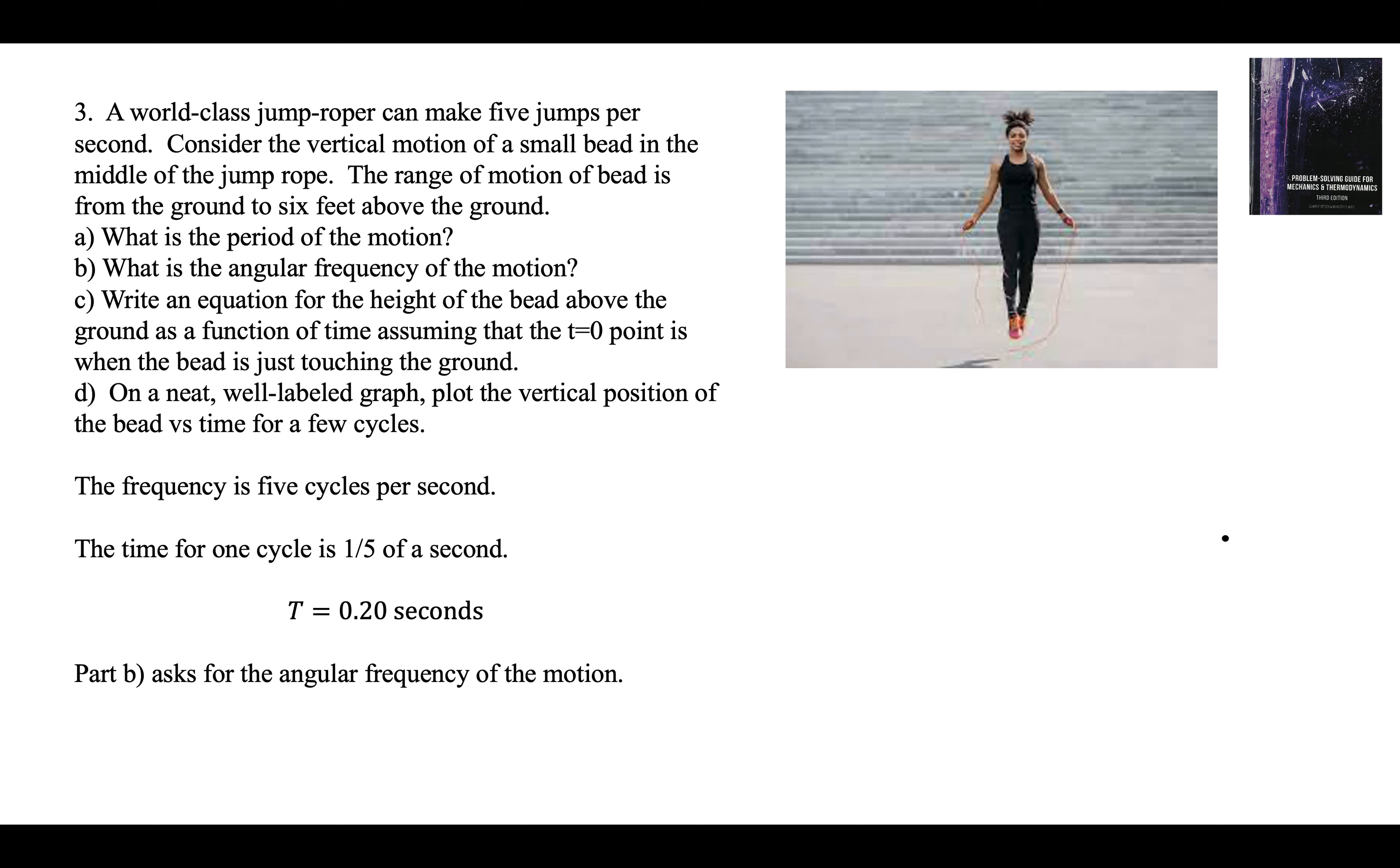Part B asks for the angular frequency of the motion. Five cycles per second. We need to put an angle in the numerator. 10 pi radians per second. There's two pi radians in one cycle. Five cycles is 10 pi radians, 31.4 radians per second.